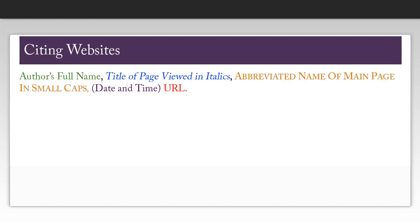In order to cite a website using the Blue Book, you need to look for the author's name, if available, the title of the page, which you can usually find by looking at the title bar at the top of your browser, and you will put this in italics, the main page title, which you will put in small caps, and you will capitalize as it is on the page. You do need to use table T13 to abbreviate this title.